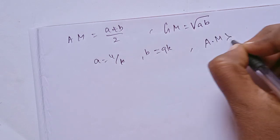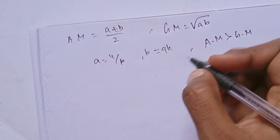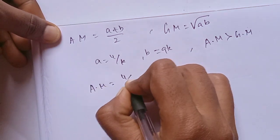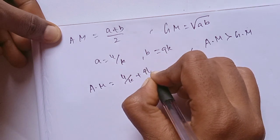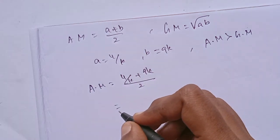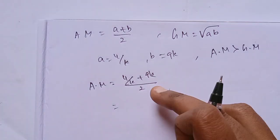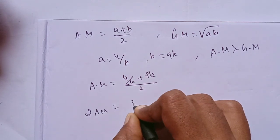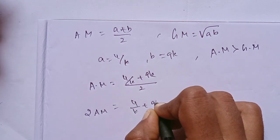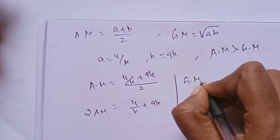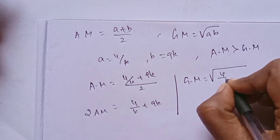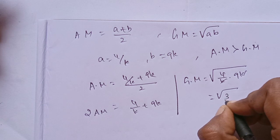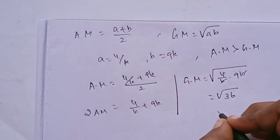Arithmetic mean is greater than geometric mean. Let's substitute. AM = (4/k + 9k)/2. So 2AM = 4/k + 9k. GM = sqrt(4/k × 9k). k cancels, giving sqrt(36) = 6.